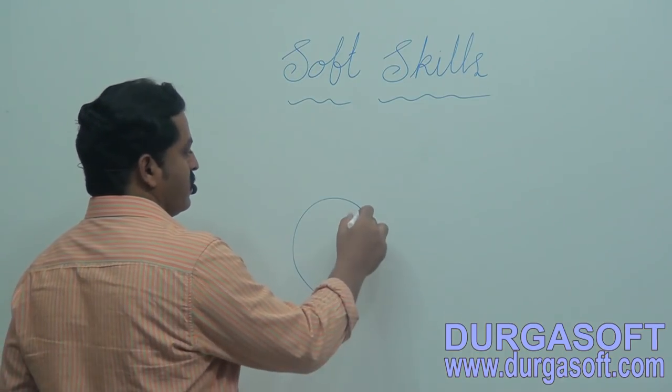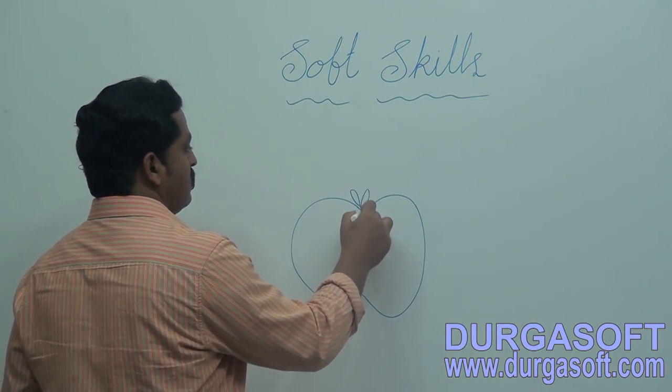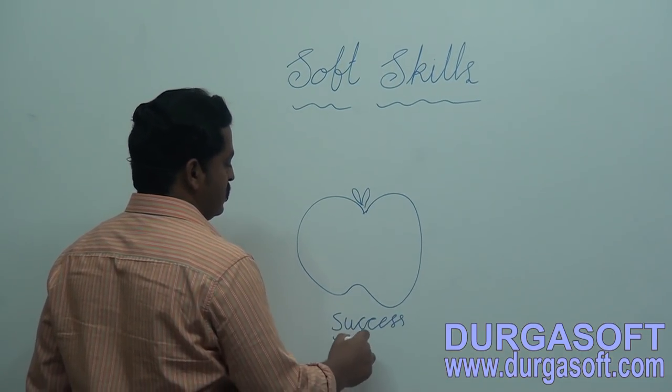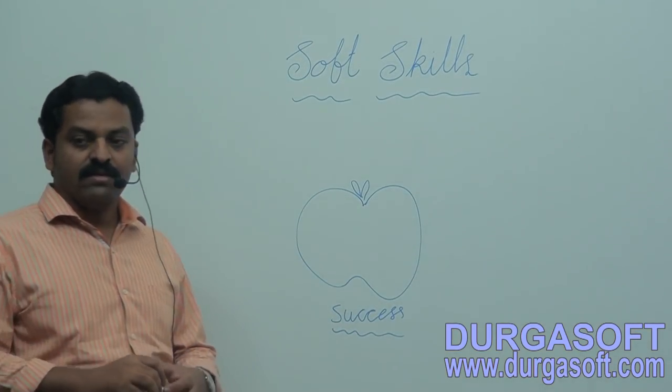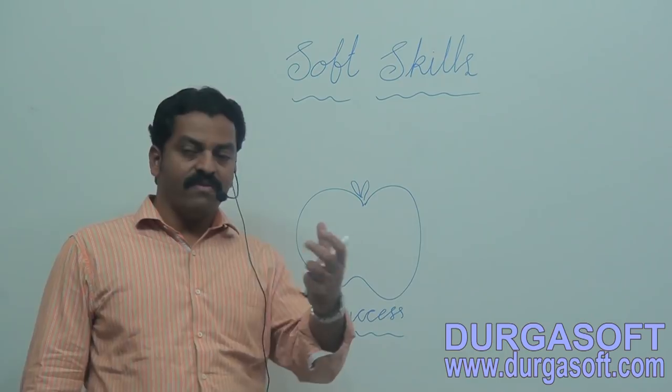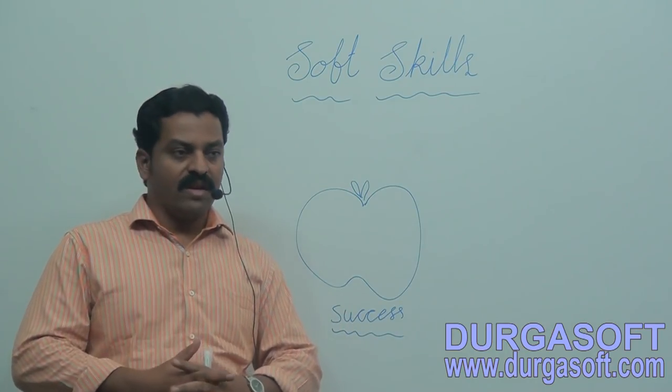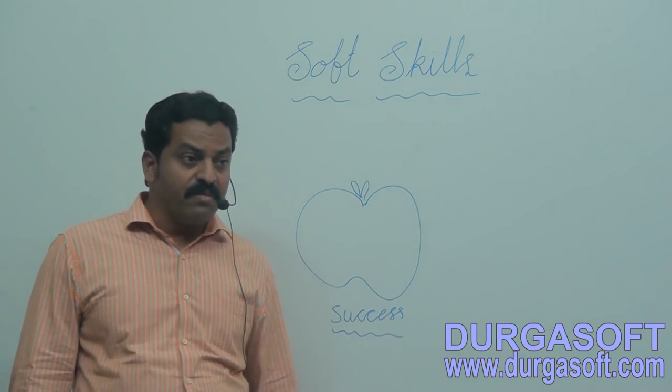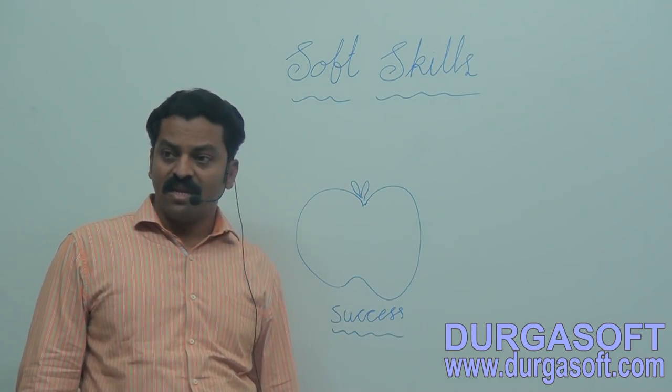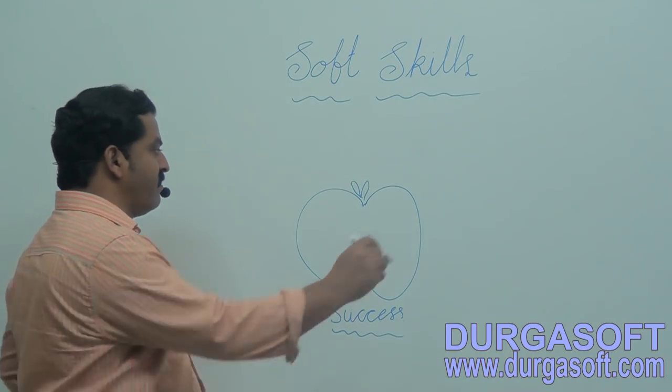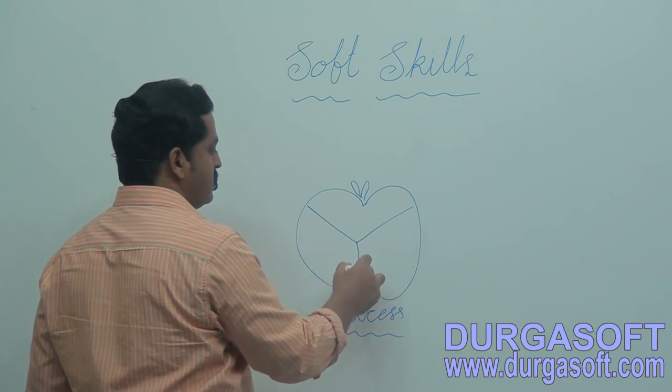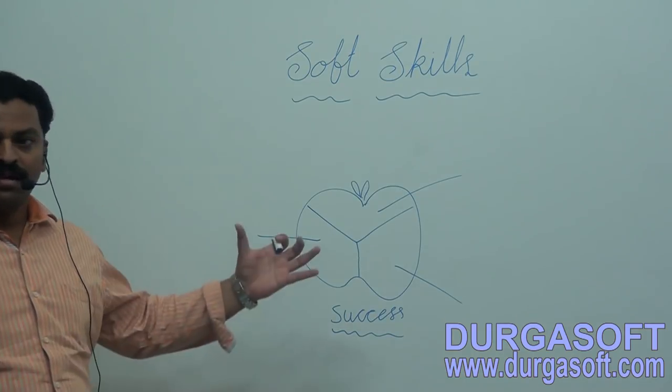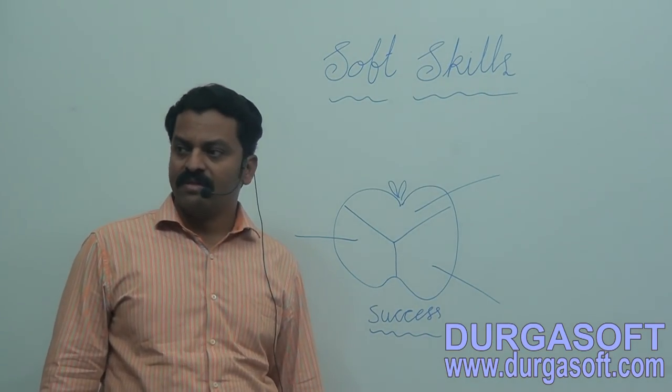Let us see. I compare the success with one apple. Imagine that this is the apple of success. In case if you want to get successful in your life, if you want to succeed in your life, there are three things, very very important things necessary. What are the three things? I divide this apple into three parts. Can you guess?